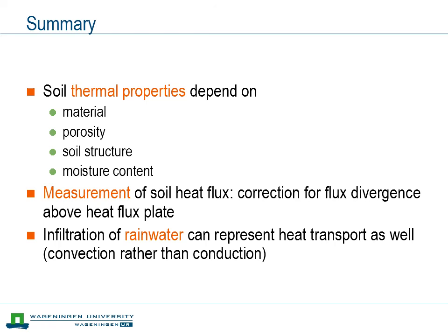Now it is time to summarize. We have quite extensively looked at the soil thermal properties: density, specific heat capacity, volumetric heat capacity, conductivity, and diffusivity. We have seen that the matrix material has a significant effect on most of these properties, but also the porosity and importantly the soil structure — especially for conductivity and diffusivity — and the moisture content also plays an important role. Then we had a quick look at the way we measure the soil heat flux and how we need to take into account the flux divergence between the soil surface and the heat flux plate. Finally, we looked at how the infiltration of rainwater can have an influence on heat transport in the soil.